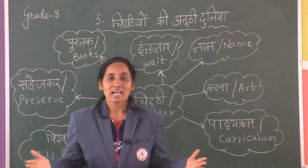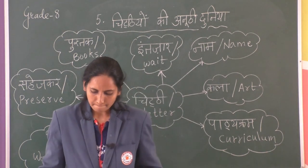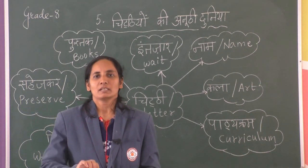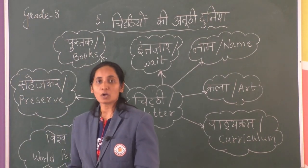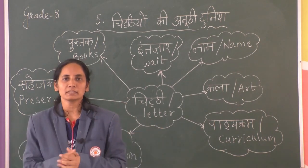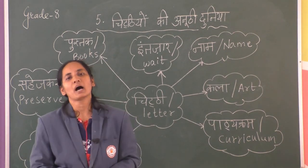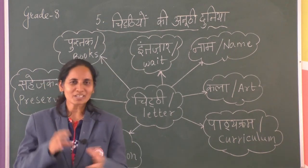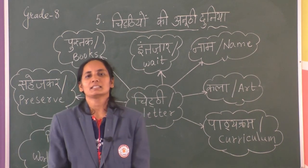We can preserve these letters — jho patr hai, haam usko sahej kar rakh sakti hai. Lekin haam aisa SMS ke saab nahi kar sakti hai. So what did we learn, children? That we should learn the art of writing letters. Tamaam sarkari vibhaagoh mein, if we compare the government departments, jho postal department hai — jho dak ka vibhaag hai — usko sabse jyadha goodwill praapth hai. Why? Because it joins people. So that was the summary of the lesson. Study well and take care.